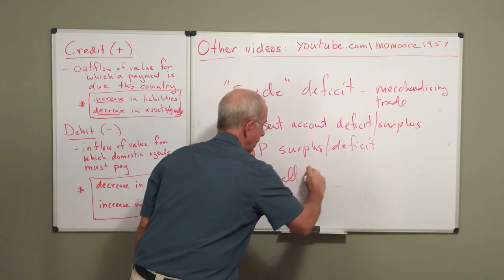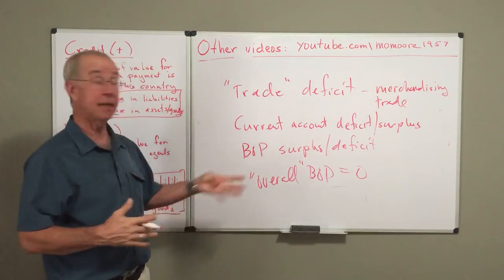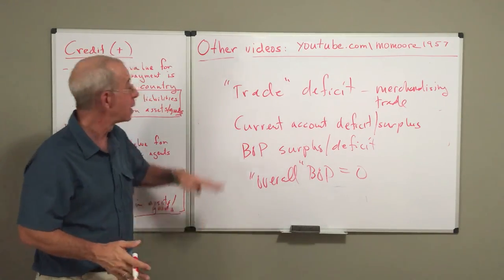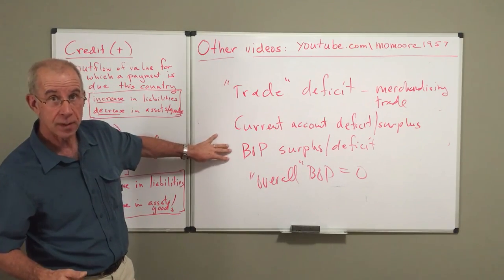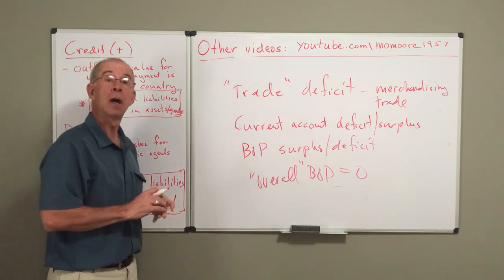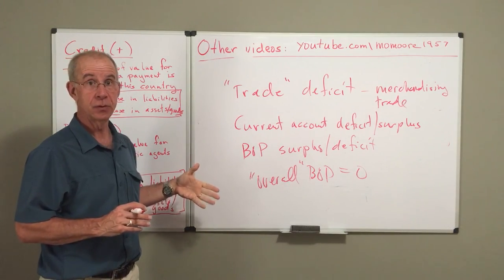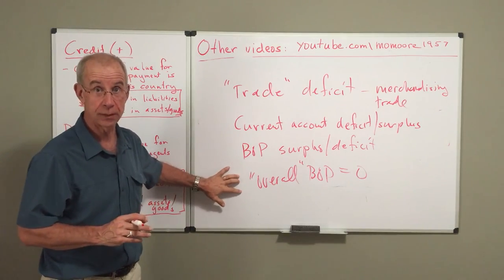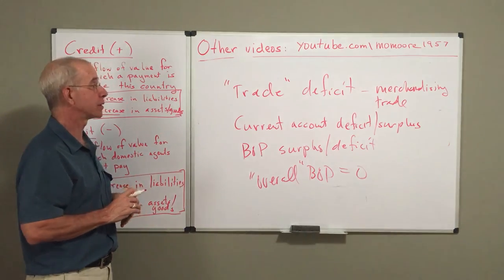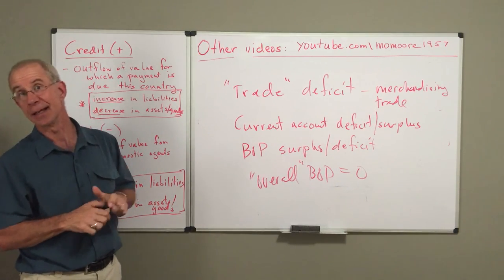None of these is inconsistent with the overall balance of payments being equal to zero — total debits and total credits being equal — because these are subcategories within the overall balance of payments. I'll have a video about each one of these as well. Individual components may not add up to zero even if the overall does. So this is a brief overview of balance of payments, and we will talk about an overview of some of the more detailed accounts in a subsequent video.